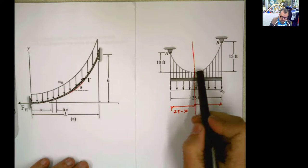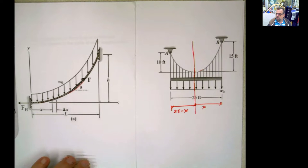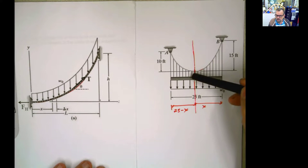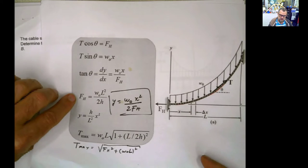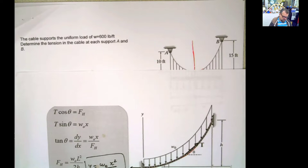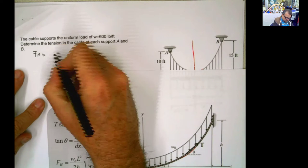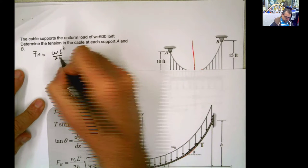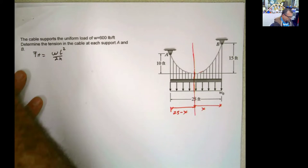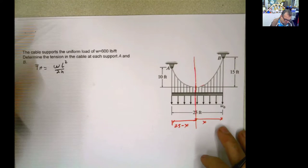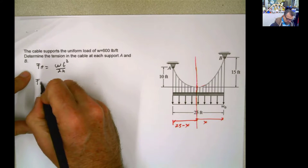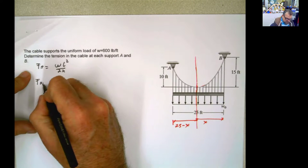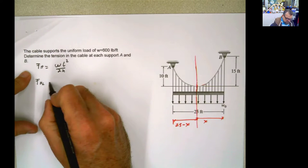Another thing that we know is the horizontal force in the cable subject to gravity load is always the same. So the horizontal force here and here is going to be the same. And even if we didn't know that, you're making a cut here at a point. At the same point, this FH and this FH has to be the same because you are at the same point.